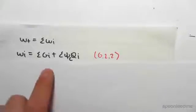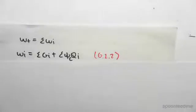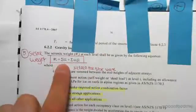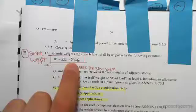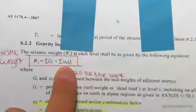Now the weight on each floor is given in 6.2.2, where the weight on each floor is the sum of the gravity loads plus the sum of a combination factor live load.